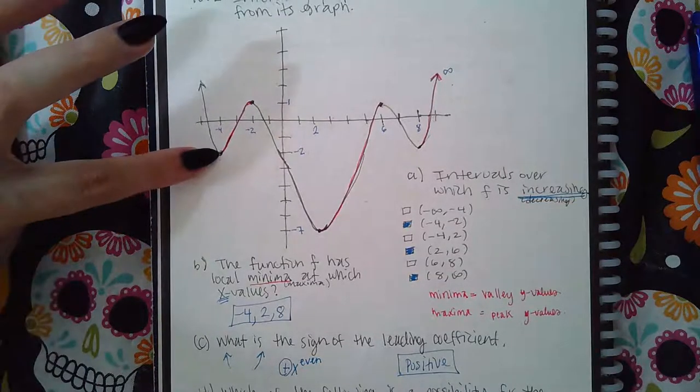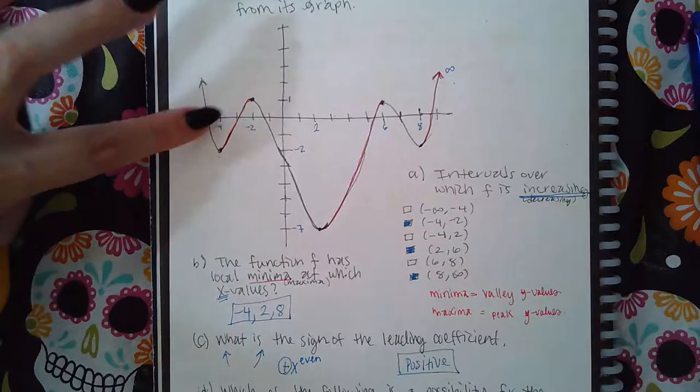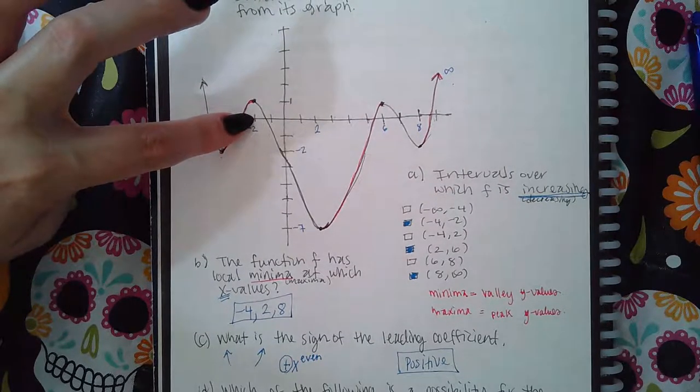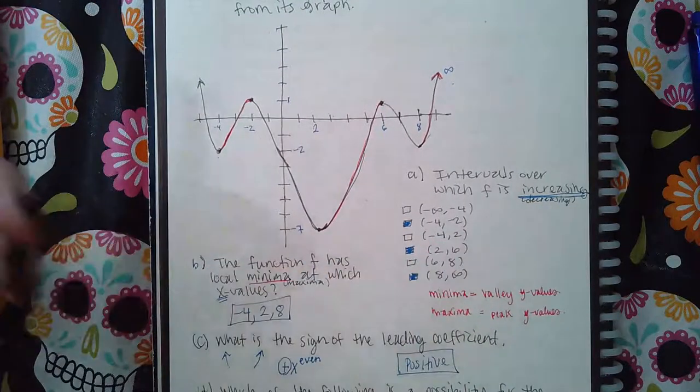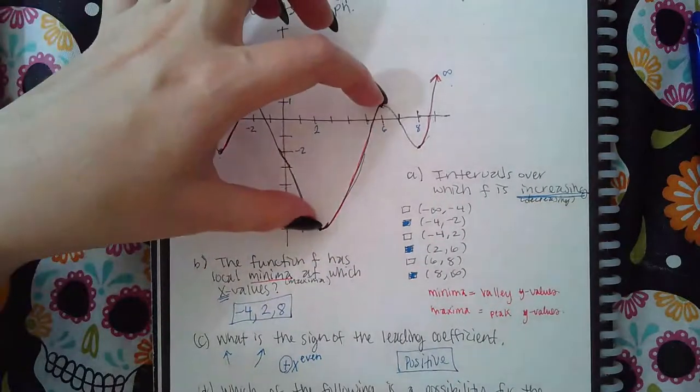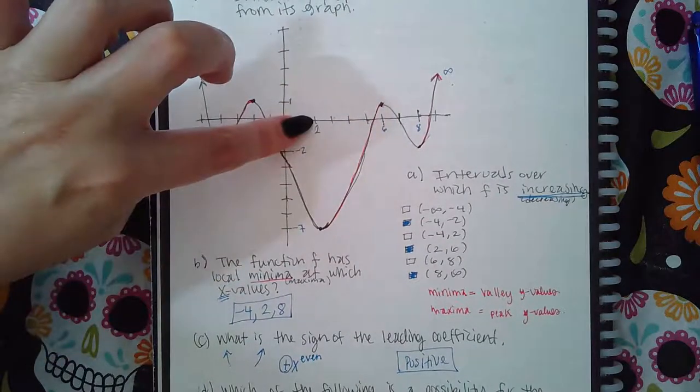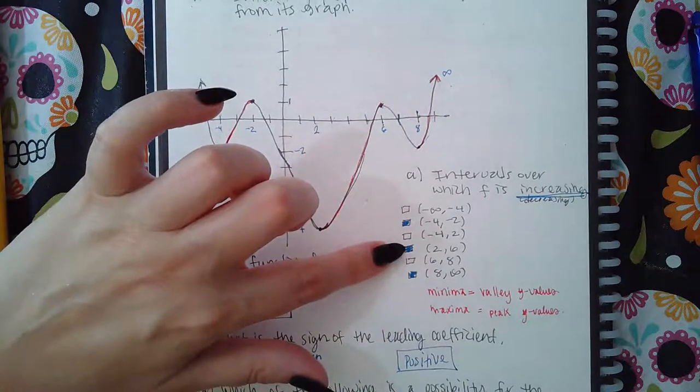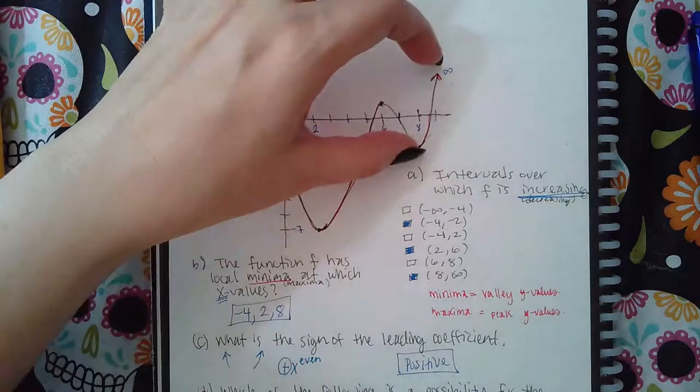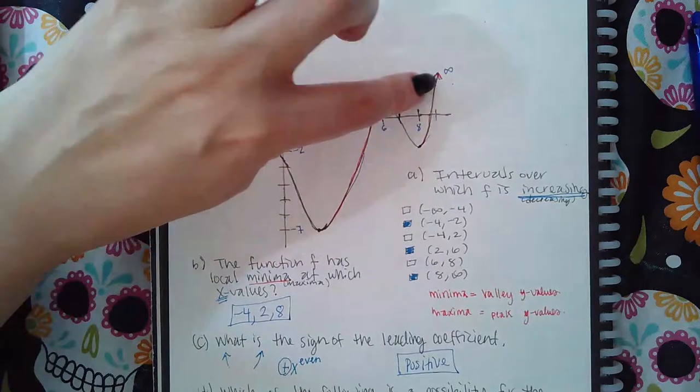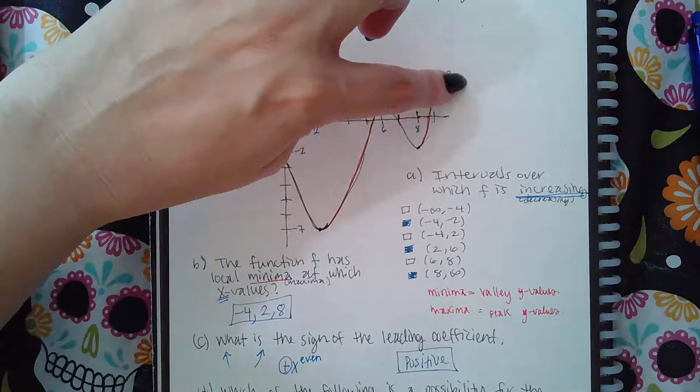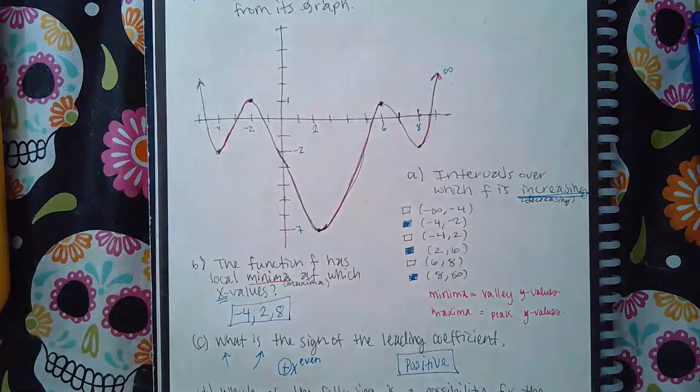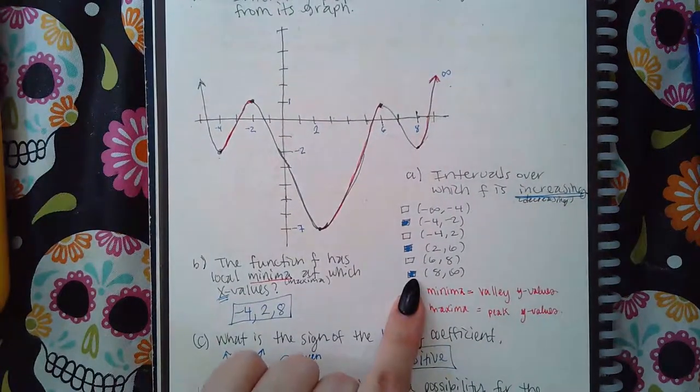This x-coordinate corresponds to negative 4 and the end of this section corresponds to the x-value negative 2, so the interval negative 4 to negative 2 should be selected. This section starts at the x-coordinate of 2 and stops at the x-coordinate of 6, so the interval 2 to 6 should be selected. And then this section, the x-value starts at 8 and because it's going to the right forever, the x-value will eventually be infinity, so then you also select 8 to infinity.